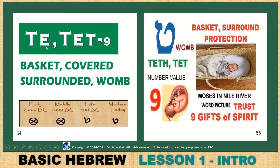Tet or Teh. Sometimes written as T or TE — 75% of the time it is only written as T. It means basket, covered, surrounded, womb. Think of nine months — a baby in the womb, all protected, like Moses in the basket in the river. If you look at it closely, it looks like a sonogram of a baby in the womb. Value of nine — nine months.